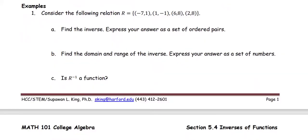For the example, consider the following relation R as the set of ordered pairs (-7, 1), (1, -1), (6, 8), (2, 8). We're going to find the inverse and express the answer as a set of ordered pairs. So the inverse of this relation, R with the superscript negative 1, equals the set of ordered pairs: (1, -7), (-1, 1), (8, 6), and (8, 2).